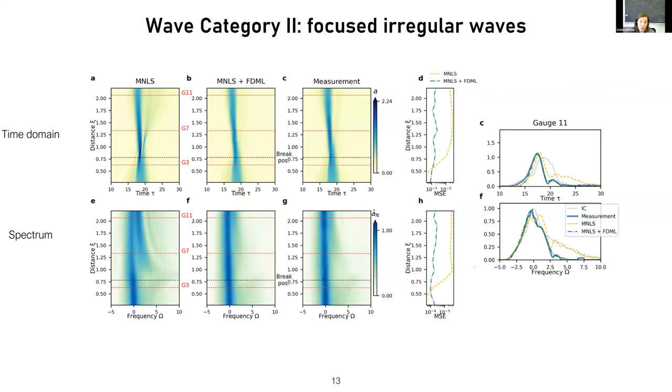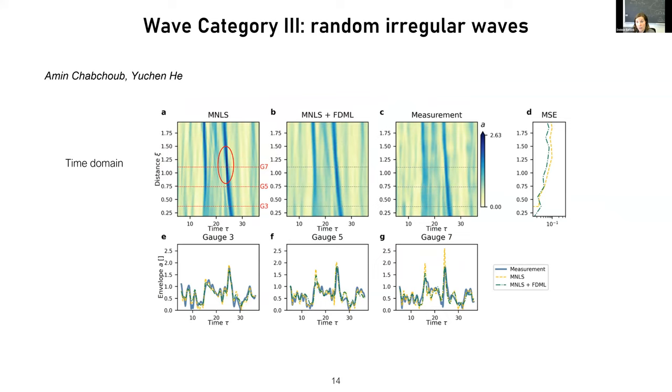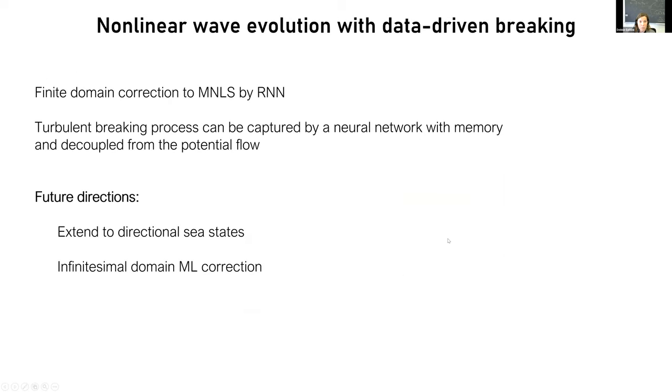For the focus waves, it's the same thing. For the MNLS, we see a lot of high amplitude in the spectrum here, whereas in the measurement it's absent. This is again correctly reproduced by our model. For the third category, the random irregular waves, we only look at the time domain because in the frequency domain there was not a clear signature. Here we see that if you have some initial condition propagated by the MNLS, you get these unphysical high peaks of amplitude, and these are corrected by the machine learning layer. Not only that, but also the subsequent evolution is corrected. Thanks to Amin and Yushan for doing supplementary experiments.